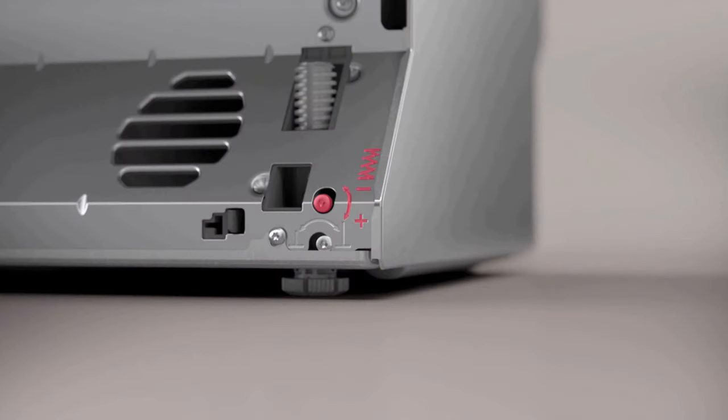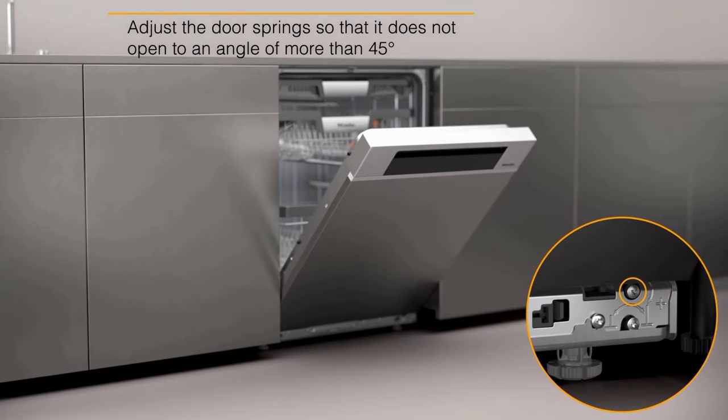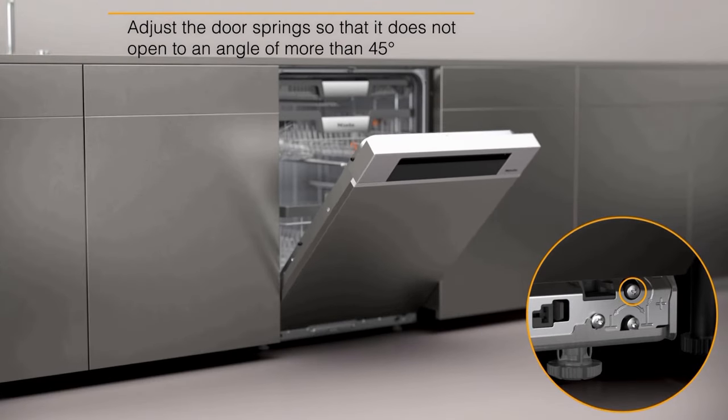The door tension screw is next to the plus, minus and spring symbol. Adjust the door tension spring screw plus or minus so that when opening the dishwasher door, the door will rest on its own at approximately 45 degrees.